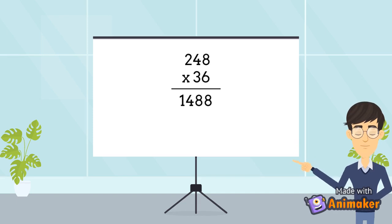Now, we start the multiplication by the tenth digit of the multiplier, that is three. But before we do that, we will write the zero at the one's place of the output.